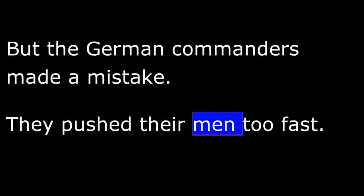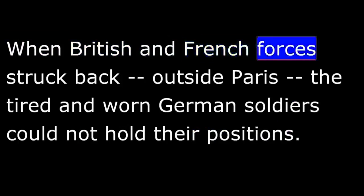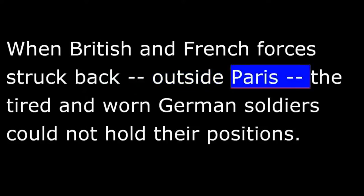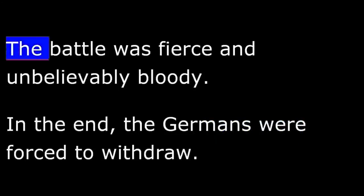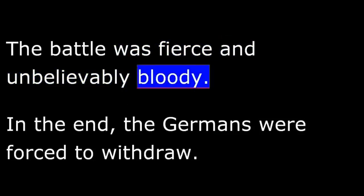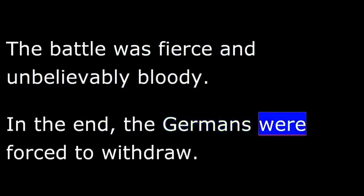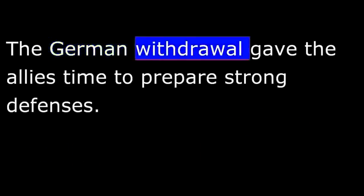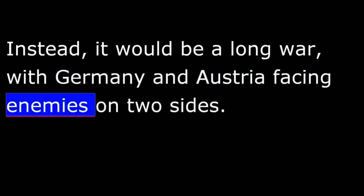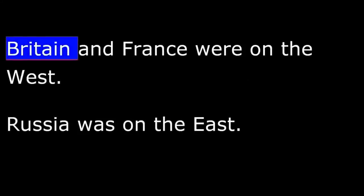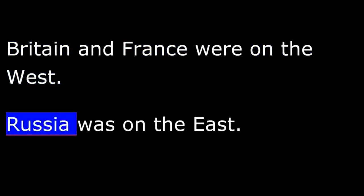They pushed their men too fast. When British and French forces struck back outside Paris, the tired and worn German soldiers could not hold their positions. The battle was fierce and unbelievably bloody. In the end, the Germans were forced to withdraw. The German withdrawal gave the Allies time to prepare strong defenses. There was no chance now for a quick German victory. Instead, it would be a long war, with Germany and Austria facing enemies on two sides — Britain and France on the west, and Russia on the east.